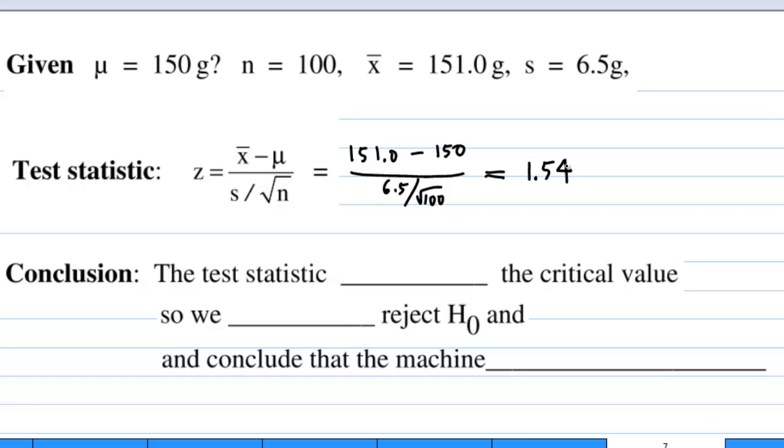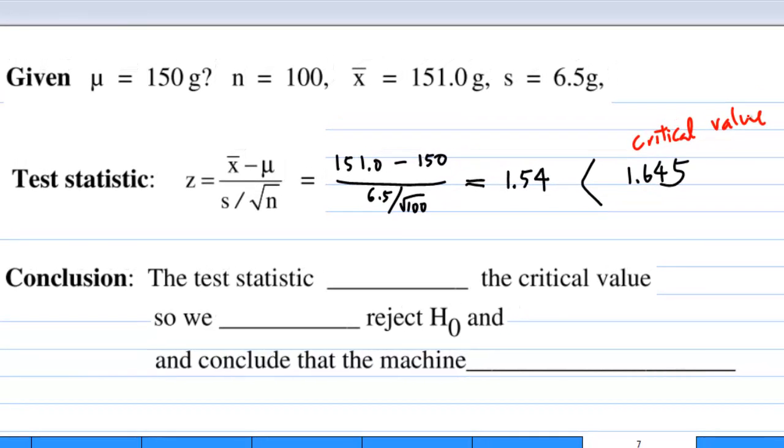Now, this 1.54 is less than the critical value of 1.645. So the conclusion is the test statistic is less than the critical value. We do not reject H0 and conclude that the machine does not drift upwards.